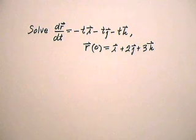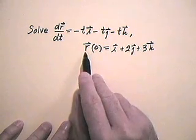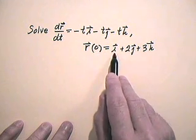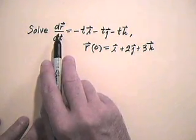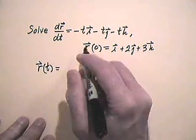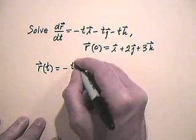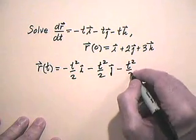When you have an equation that relates the derivative of a function to another expression, what you have in effect is a differential equation. Let's solve a differential equation for a vector-valued function: solve dr/dt = −ti − tj − tk, with the condition that r(0) = i + 2j + 3k. R itself must be an antiderivative of that expression, so r(t) = −(t²/2)i − (t²/2)j − (t²/2)k.